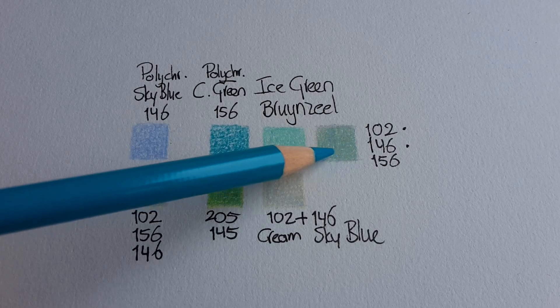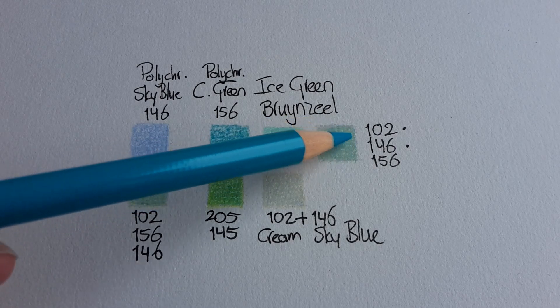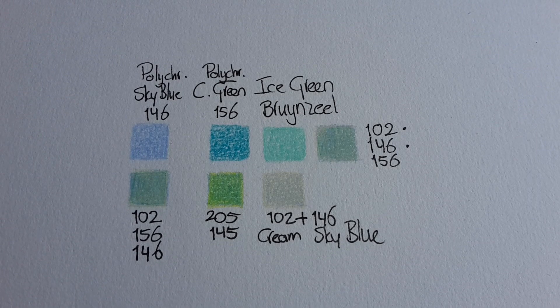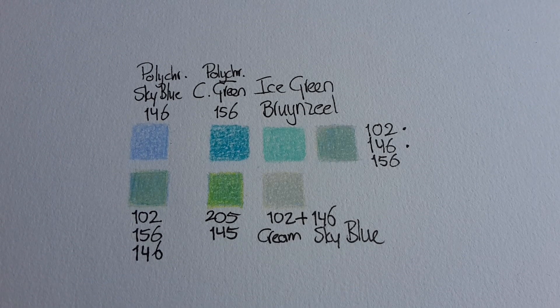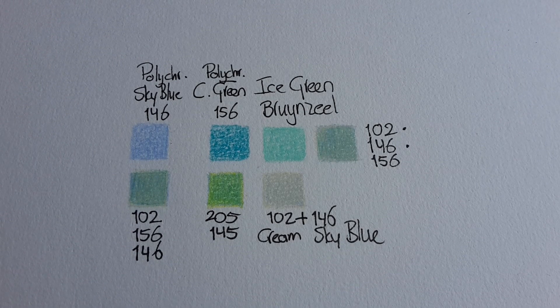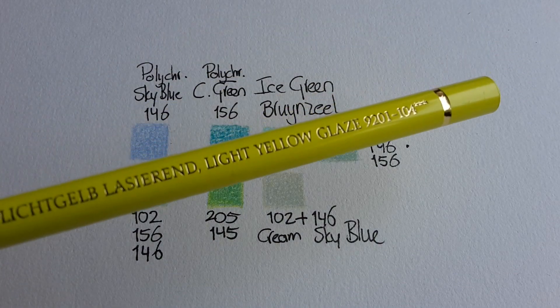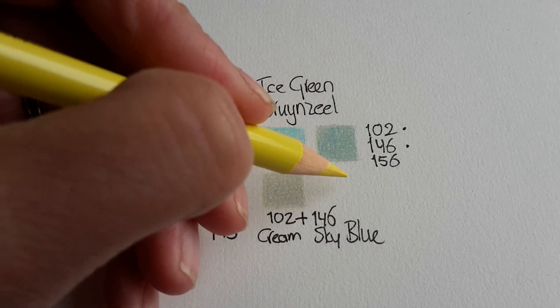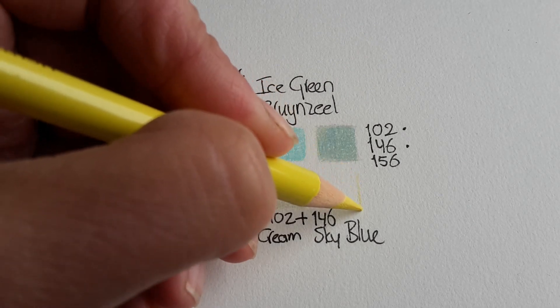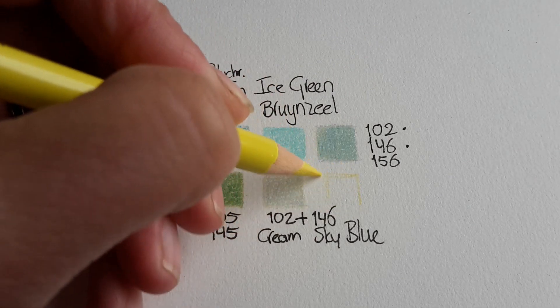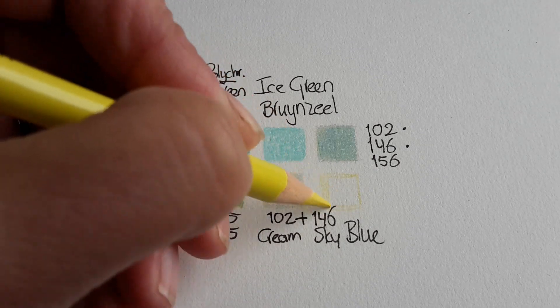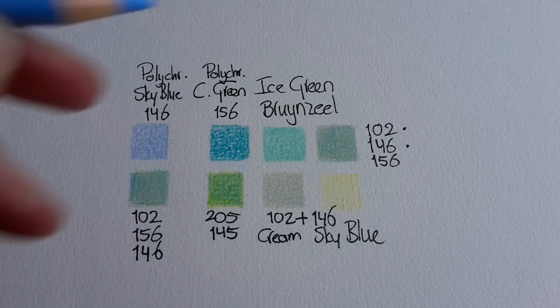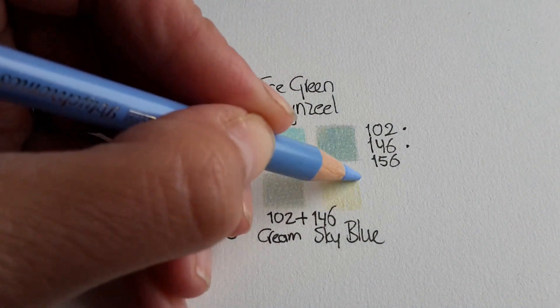Now this color, this blending looks a bit dull. So I am going to do one more color combination with a different kind of yellow. And I am using this one, light yellow glaze. Let's see what happens then.